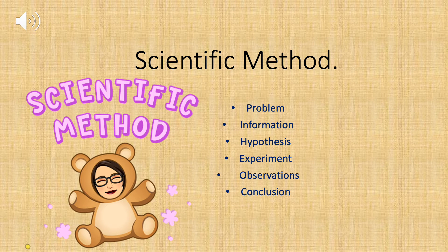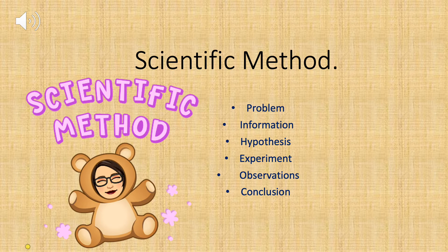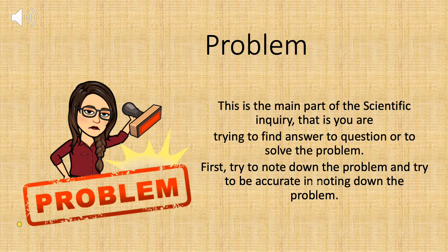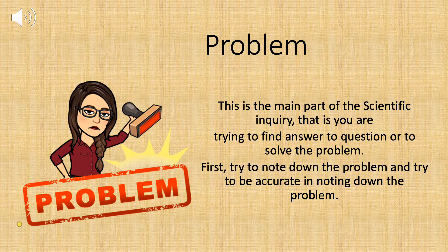Always follow these steps when you are doing enquiry: Problem, Information, Hypothesis, Experiment, Observation, and Conclusions. Now let's see each of these enquiry skills in detail. The first one is Problem — first, try to find out the answer to the questions or to solve the problem.